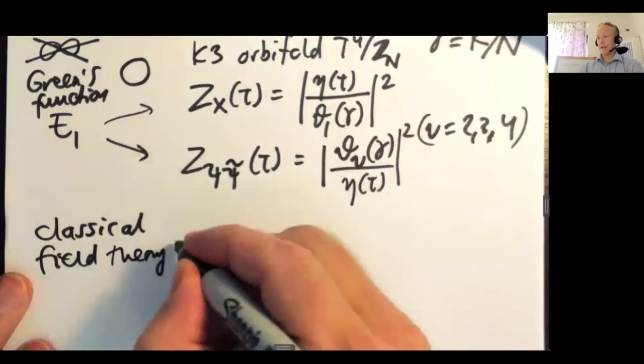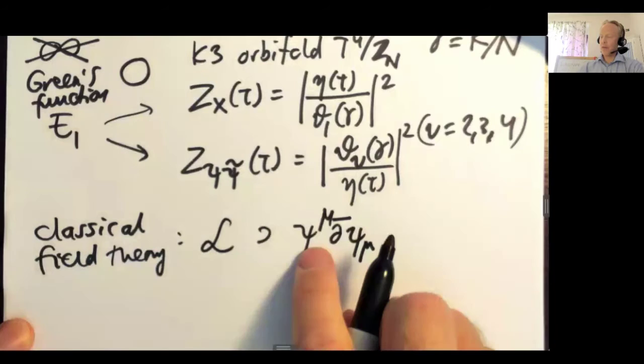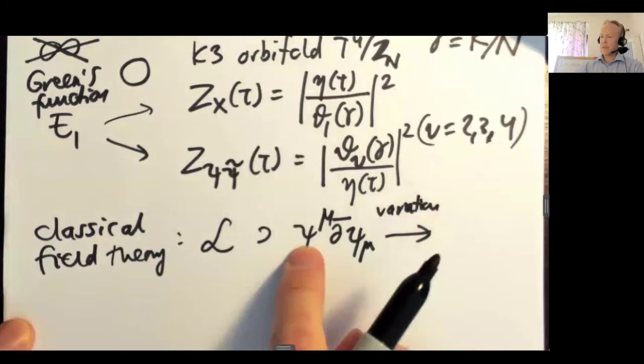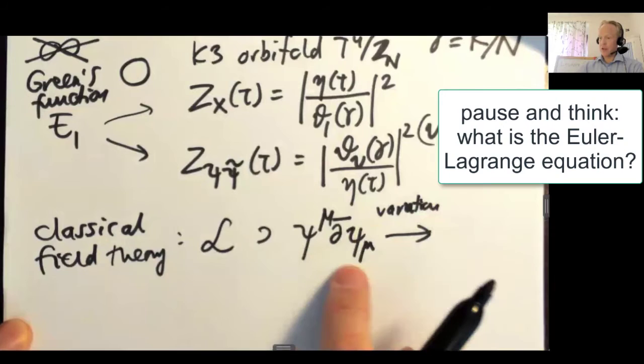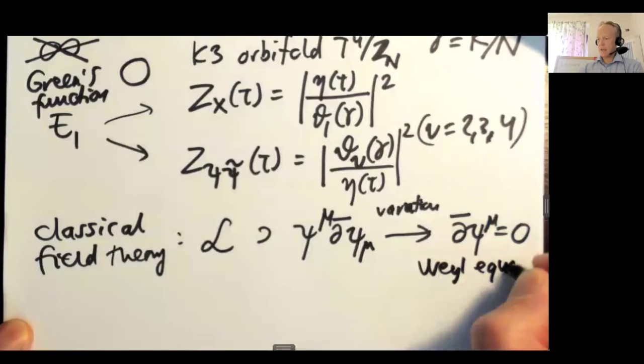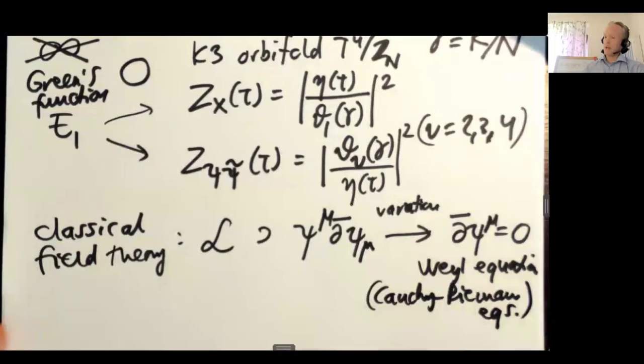In classical field theory, the world sheet supersymmetric polycoaction Lagrangian contains a psi term. Psi is a fermion field on the world sheet, so it depends on this parameter z. If we do the variations and compute the Euler-Lagrange equations, we get the equation of motion for this field psi. So you get del-bar psi mu is zero. I would actually call this the Weyl equation in this context. It happens to also have a more mathematical name, which is the Cauchy-Riemann equation. This just tells that this psi is holomorphic.